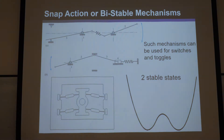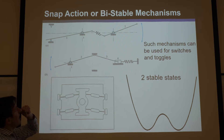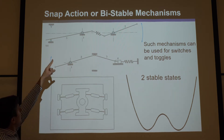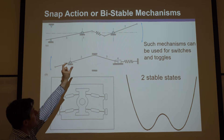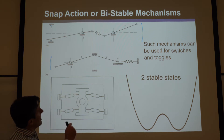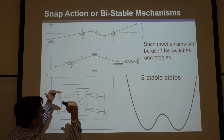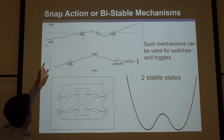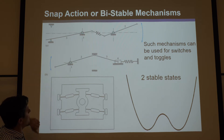There are snap-action, bi-stable, or multi-stable mechanisms, and they usually have a spring or some kind of compliance in them. On the top left you can see a bar with a pin joint at the top, a spring in between, and another bar with a pin. If you bend that up, it compresses the spring until it snaps over to another stable state.